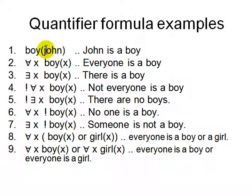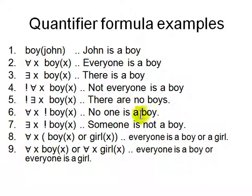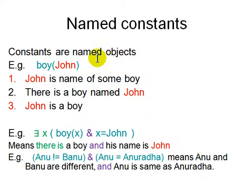Boy(John) — John is a boy; John is a constant, not a variable, and being a boy is a property. For all X, Boy(X) means everyone is a boy. There exists X, Boy(X) means there is somebody who is a boy. NOT For all X, Boy(X) means not everyone is a boy. NOT There exists X, Boy(X) means there are no boys. For all X, NOT Boy(X) means nobody is a boy. There exists X, NOT Boy(X) means somebody is not a boy. For all X, Boy(X) OR Girl(X) means everyone is a boy or a girl — which is different from: For all X Boy(X) OR For all X Girl(X), meaning everyone is a boy OR everyone is a girl.